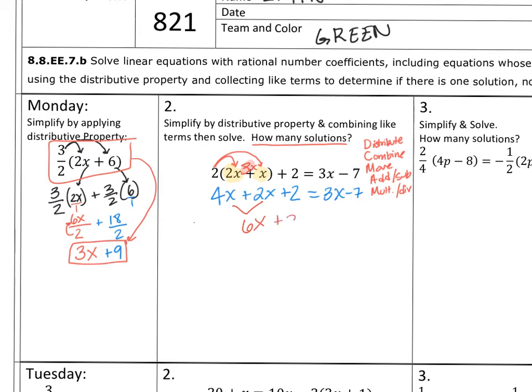Which is ultimately what we end up getting here when we combine that. 6x plus 2 equals 3x minus 7. I didn't combine like terms in here, but I could have. Because I could add 2x plus x and that'll get me 3x. Or I can distribute to both of them. But it's very rare that you can combine these two together. That's why I didn't even do it at the beginning.